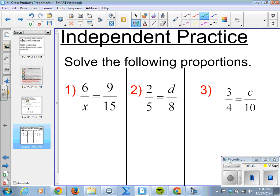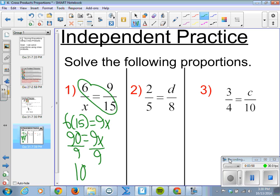So, 6 times 15 equals 9 times x. 6 times 15 is 90. 90 equals 9x. Divide it by 9. We get 10 equals x.